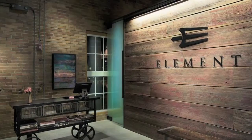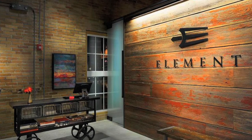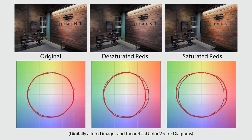The way we'd use TM30 together as a system to pick out the most appropriate light source for an application would be to look at both the average values together as well as some of the more detailed information. For example, if I'm trying to increase saturation slightly but not get too far from the reference, I'd look at maybe an RF in the 80s and an RG slightly above 100. And if I knew I wanted to really make the reds pop, then I would go to the color vector graphic and look at where exactly the colors are being saturated.